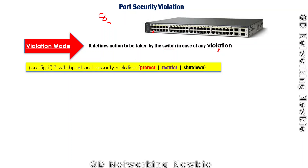To configure a violation mode, we use the command: switchport port-security violation. Of course, we have to be within that particular interface where we want to configure it — for example, FastEthernet 0/1. We then have three different violation mode options we can configure on the port.